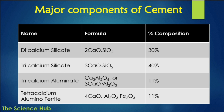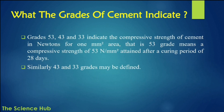Here are the major components of cement with their formulas and percent composition: dicalcium silicate (2CaO·SiO₂) at 30%; tricalcium silicate (3CaO·SiO₂) at 40%; tricalcium aluminate (3CaO·Al₂O₃) at 11%; and tetracalcium aluminoferrite (4CaO·Al₂O₃·Fe₂O₃) at 11%.